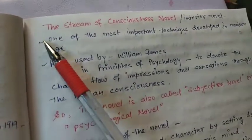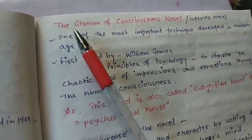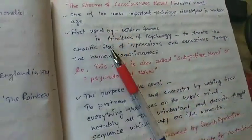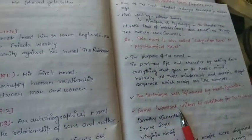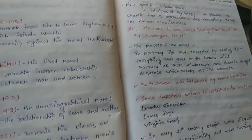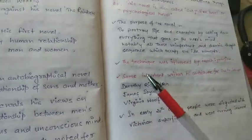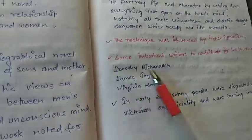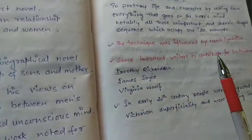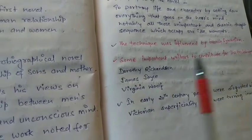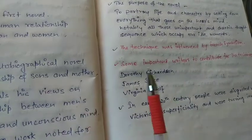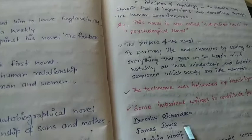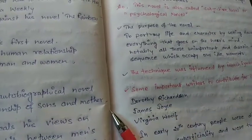Here I have an important term: the Stream of Consciousness novel — also called the Interior Novel. You will create some notes on this. I will add one more important thing: as I have written all the terms, I have also written some examples — Dorothy Richardson, James Joyce, Virginia Woolf. In my notes I will write about them: how Virginia Woolf used the stream of consciousness novel, and what the relationship was between James Joyce and Dorothy Richardson. So we will go in depth and have a proper format to follow.